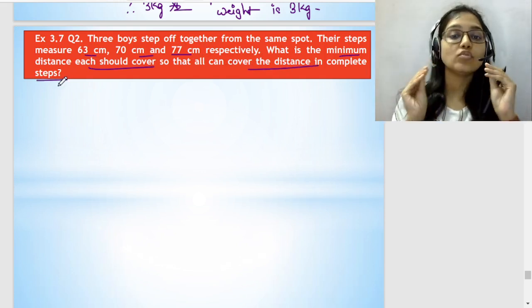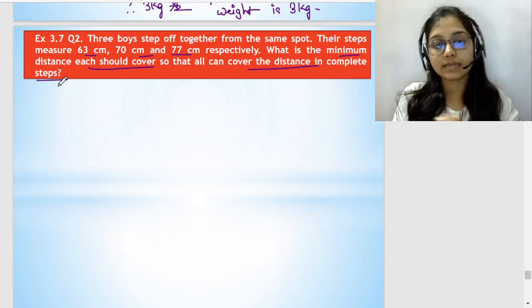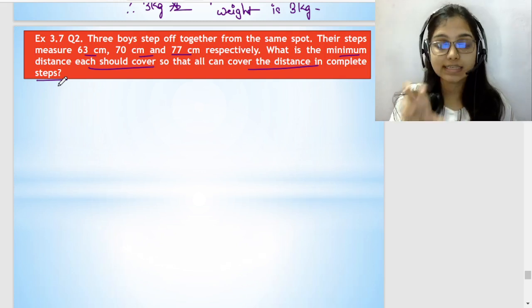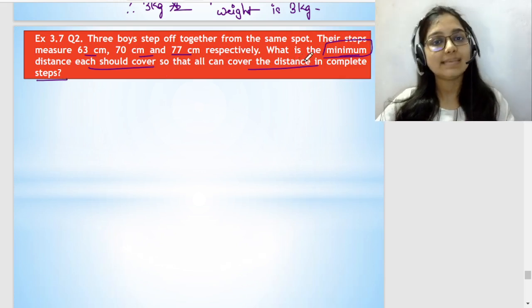So minimum distance each should cover so that all can cover the complete distance in complete steps. When minimum is asked, what do we need to do? We find the LCM, right?